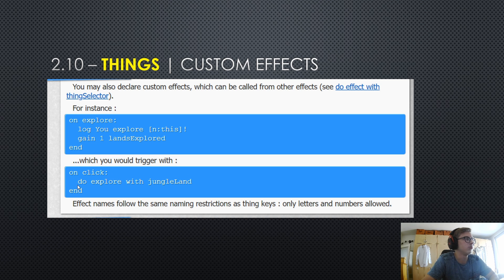And then you would trigger that with the on click effect, where once you click it, it would do explore with a thing with the thing key, jungle land. Of course, also important to mention effect names follow the same naming restrictions as thing keys. Only letters and numbers are allowed.